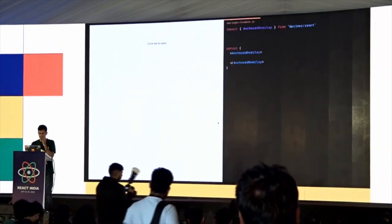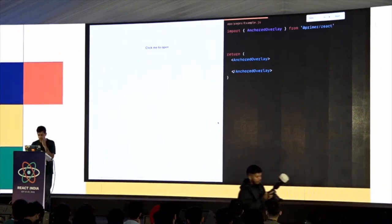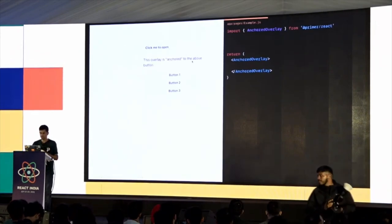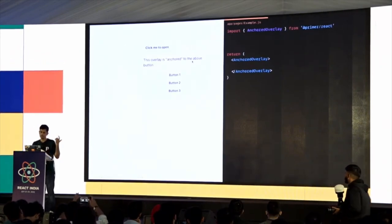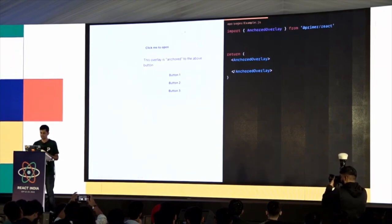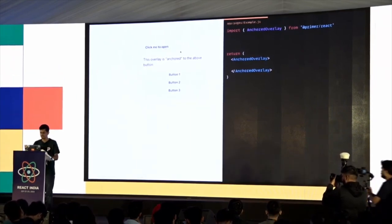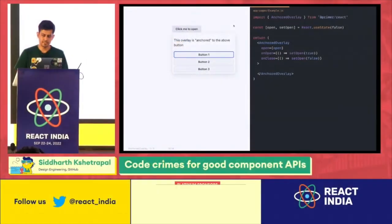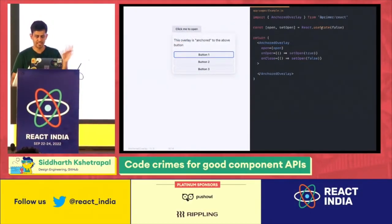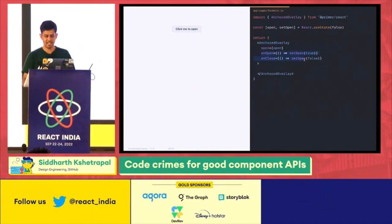To start, let me show you this component. We call it AnchoredOverlay — it's an overlay which gets anchored to something. It's a controlled component, so you have to manage reactive state and pass open, closed, handle onClose and onOpen.